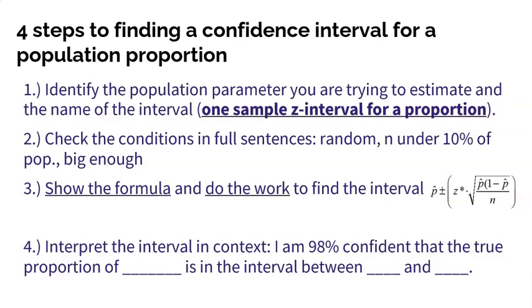Second, you got to check the conditions in full sentences. You need to make sure that the sample is random to avoid bias, your sample size is under 10% of the population to assume independence, and that your sample is big enough.